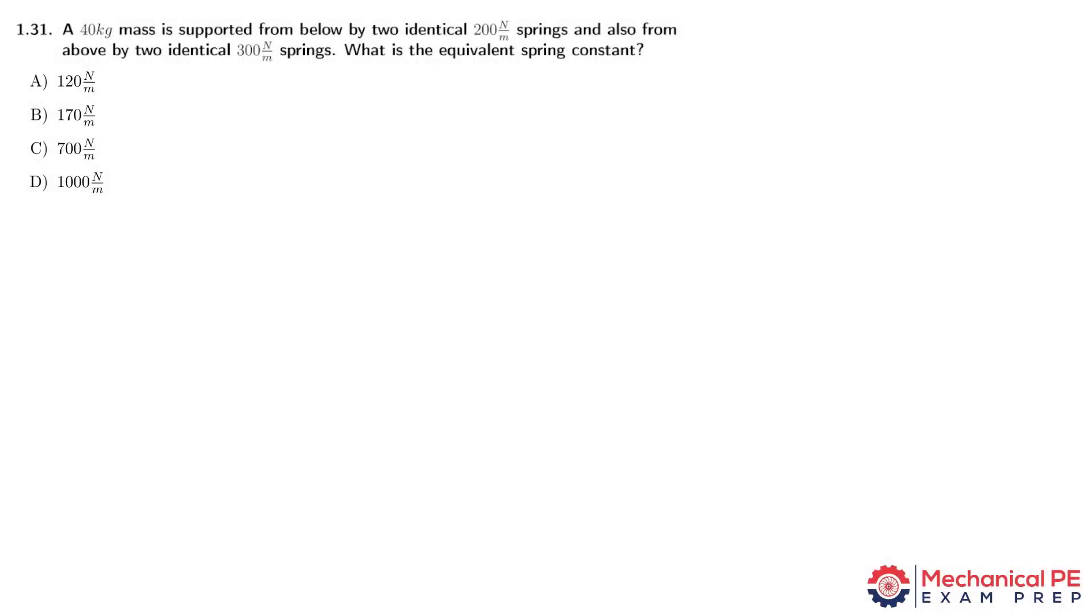A 40 kilogram mass is supported from below by two identical 200 newton per meter springs and also from above by two identical 300 newton per meter springs. What is the equivalent spring constant?